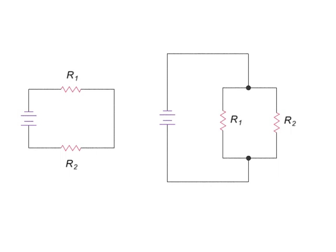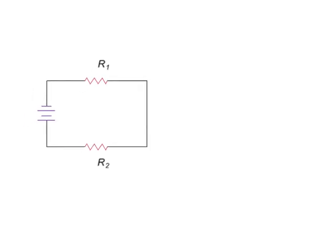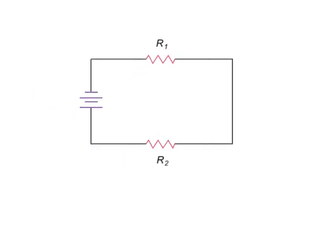Total resistance in series and parallel circuits can be determined using basic equations. The total resistance of load resistors R1, R2, and R3, shown here in series, can be determined by simply adding their ohms values together.